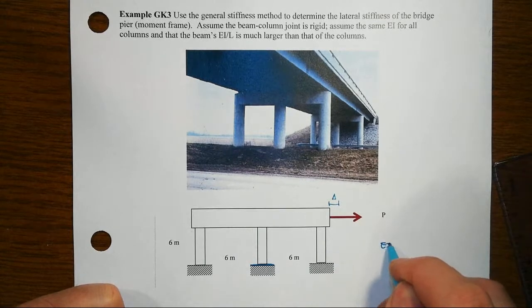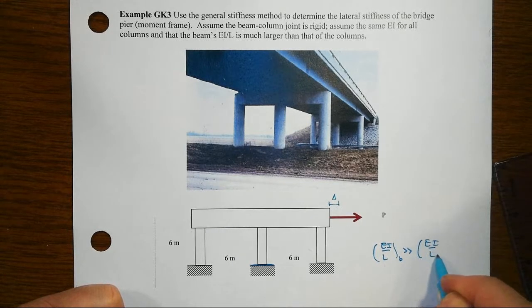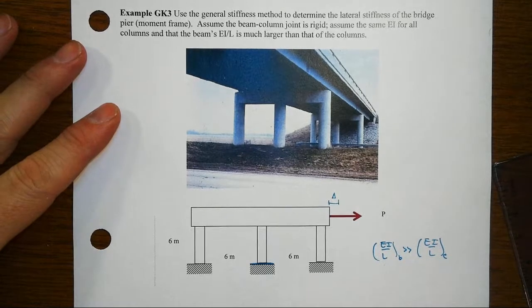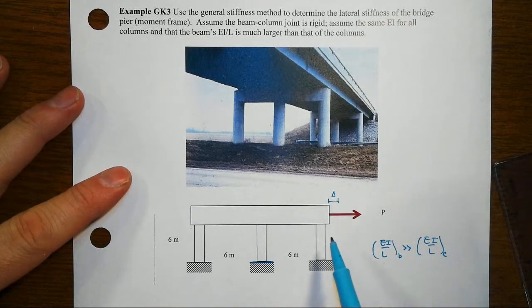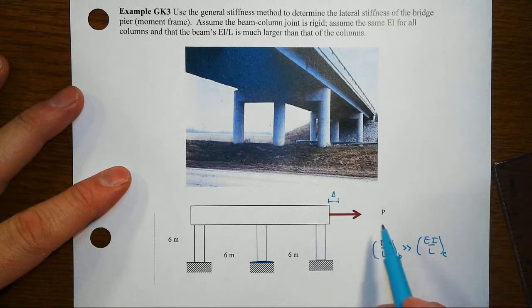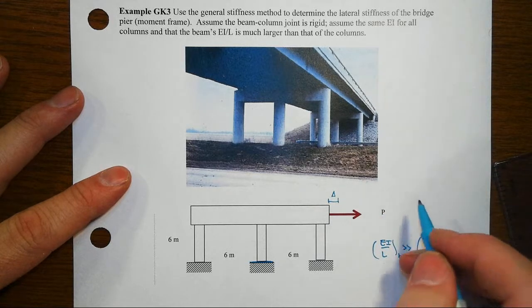The reason why that's going to be crucial is that as we approach the general stiffness method here, we're going to say look, we only want this one displacement delta up here and its relationship to this force P that we're seeking. A relationship that is P equals some stiffness times delta.